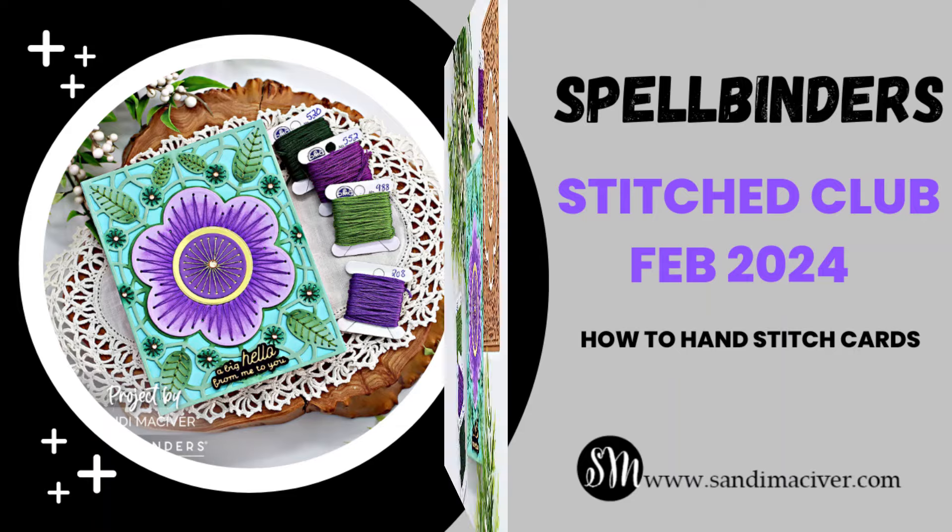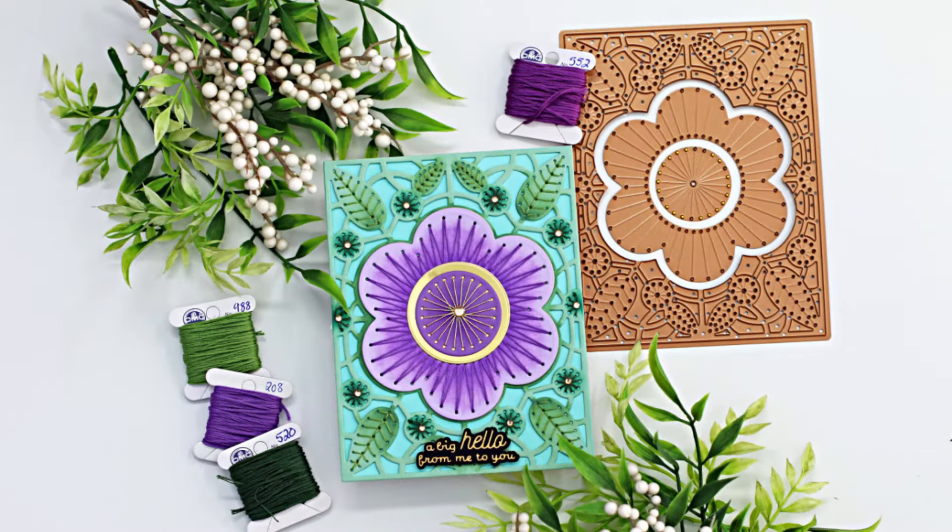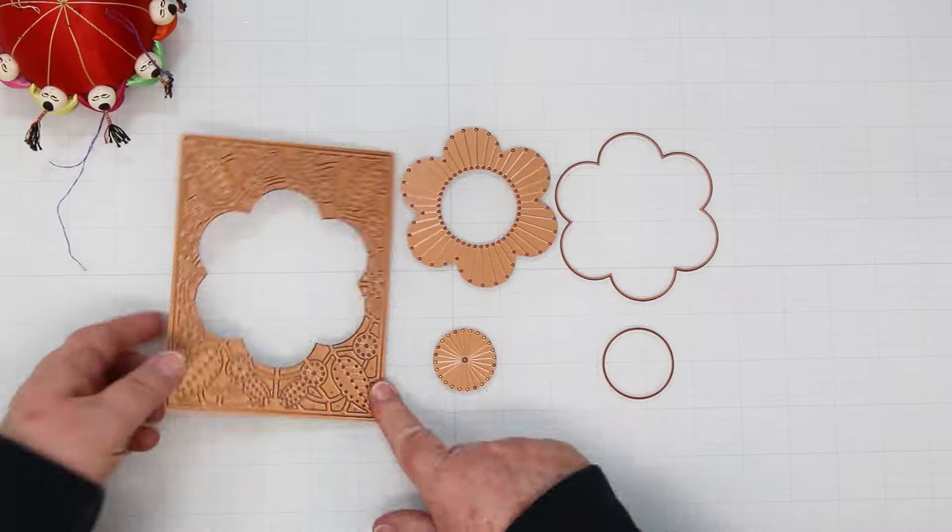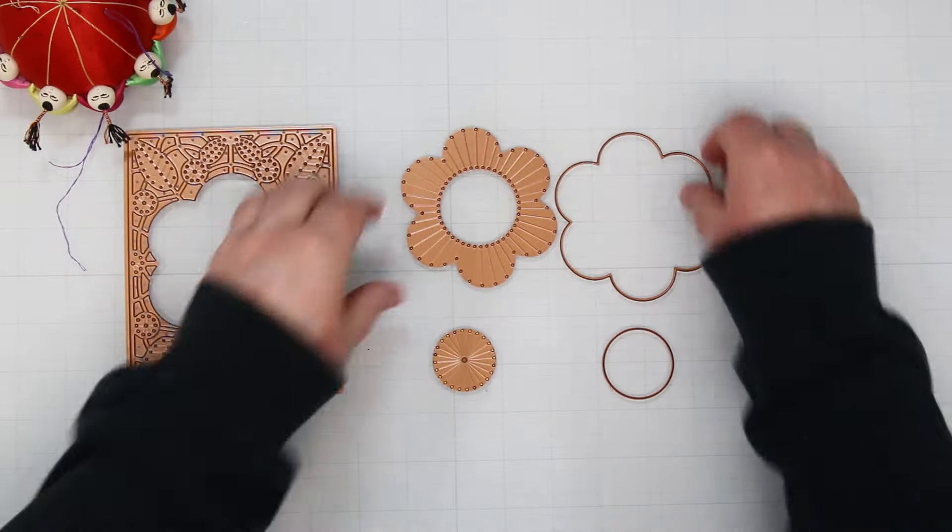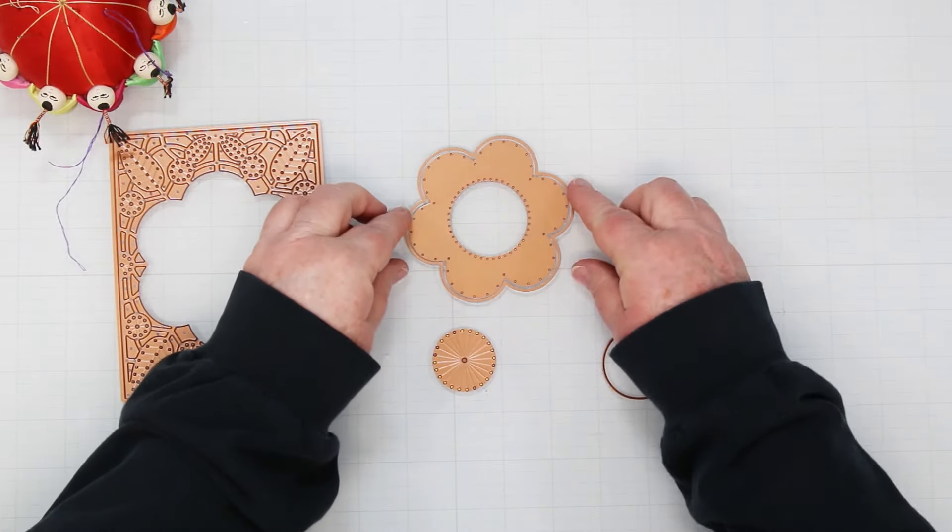Hi card-making friends, welcome back. It's Sandy McIver here and today I am playing with Spellbinder's Stitch Die of the Month. It's called Stitched Floral Focal Card Front and we're going to make a card with it, obviously.